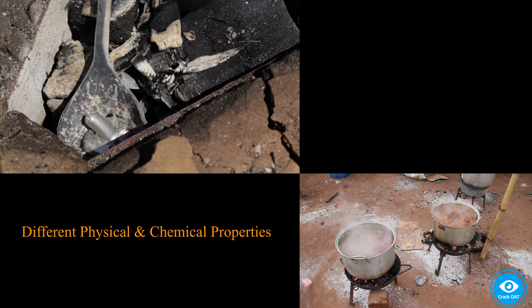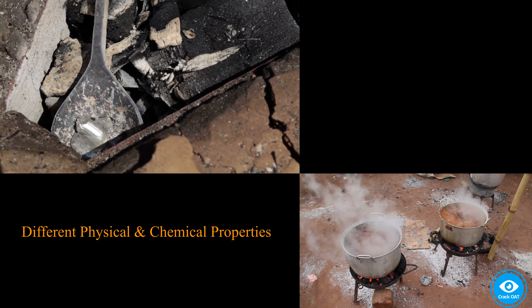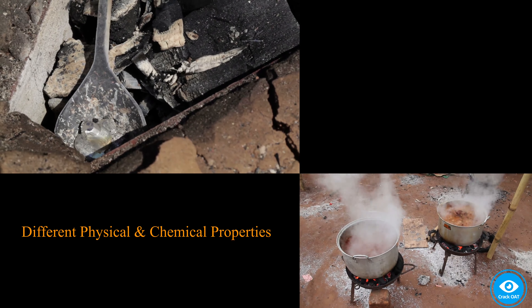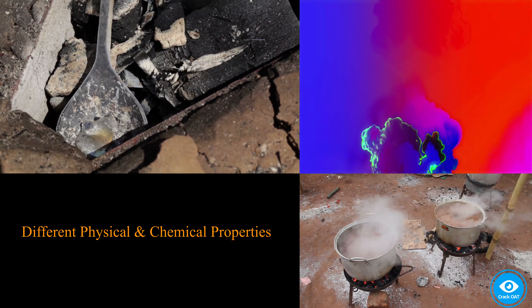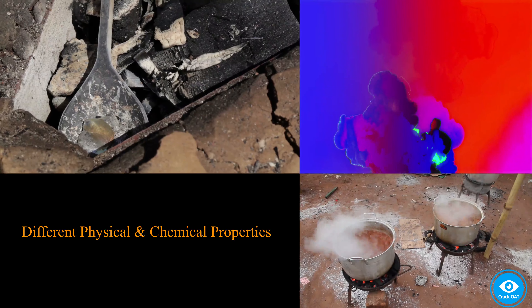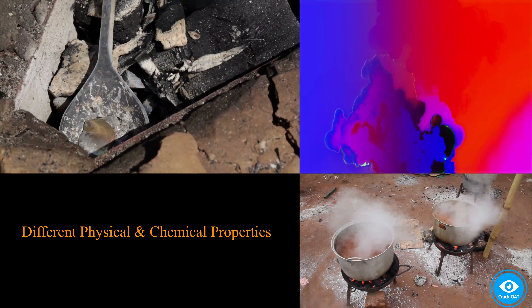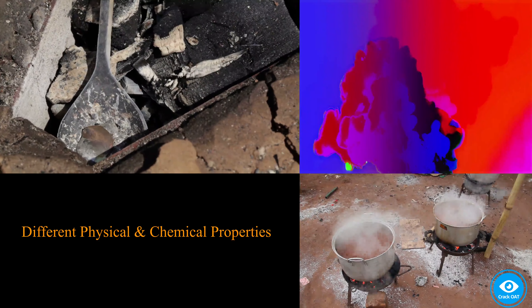For example, isomers have different melting and boiling points, different densities, and produce different colors. There are three broad categories of isomers.